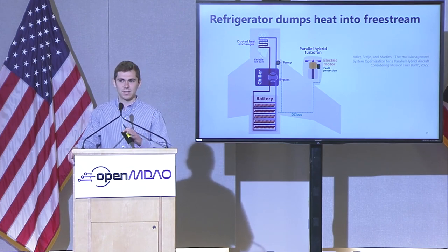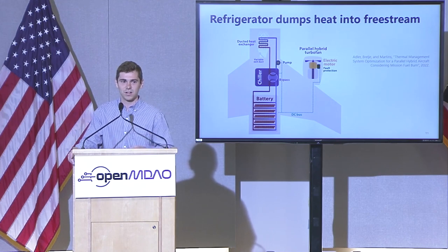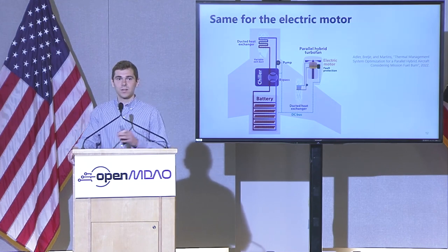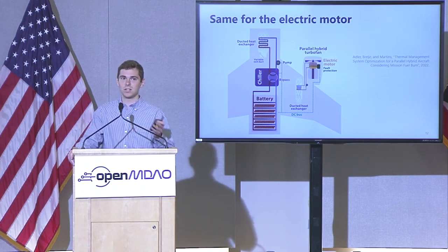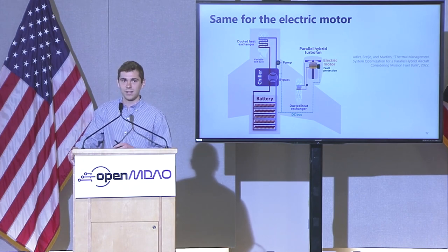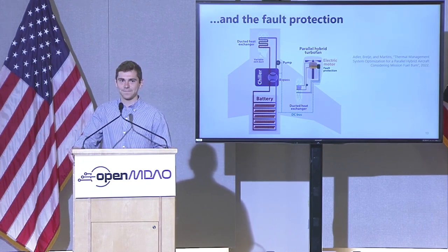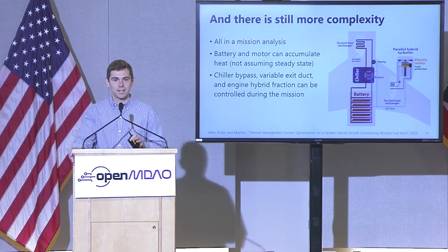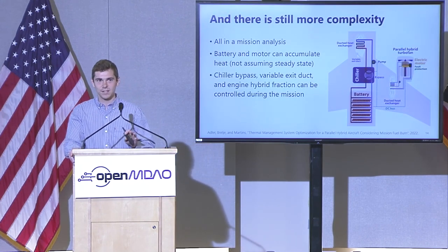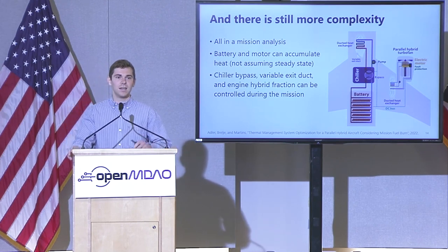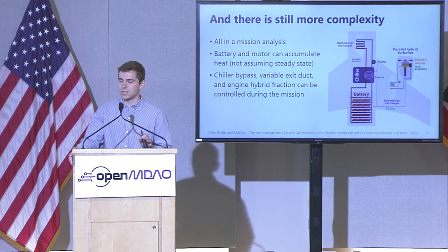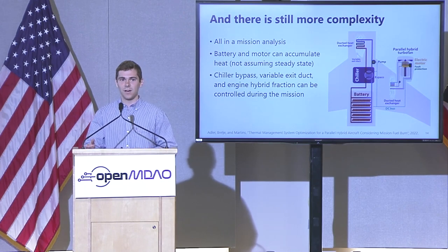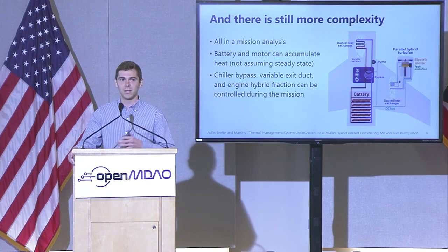This problem ends up with something like 50 design variables and a few hundred constraints. We also have a similar loop for the electric motor — no active cooling, but the same pump and liquid coolant loop. And we also do it for the fault protection. Furthermore, the battery and electric motor are not assumed to be at steady state — the heat in doesn't necessarily equal the heat out. We can see how the thermal mass of the battery and motor affects temperature swings throughout the mission and take advantage of the ability to accumulate heat.